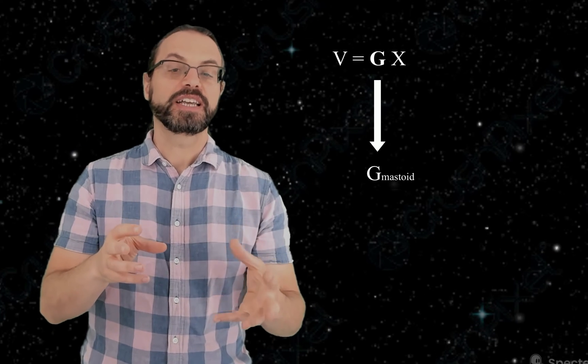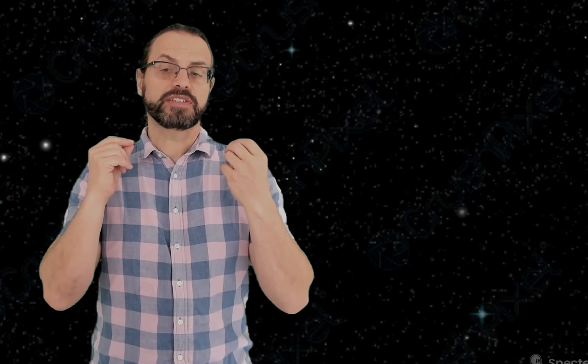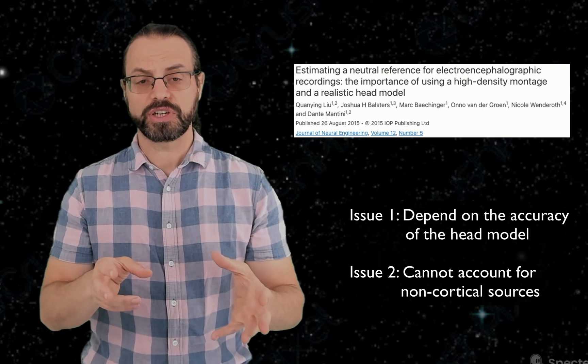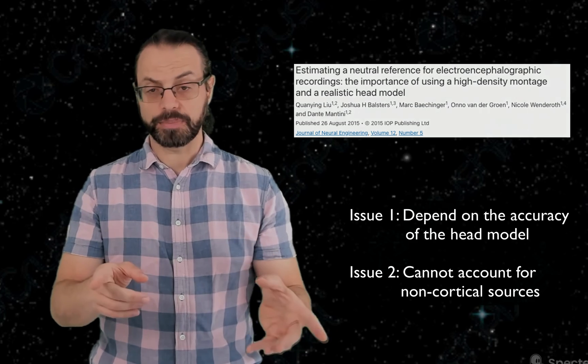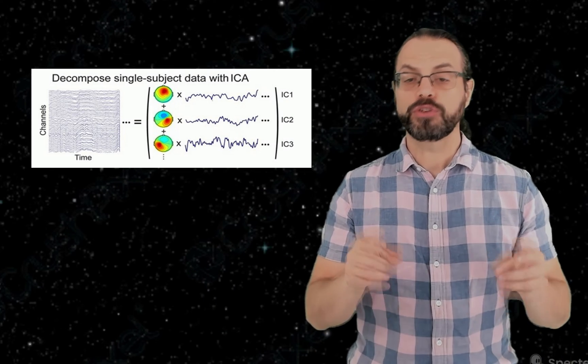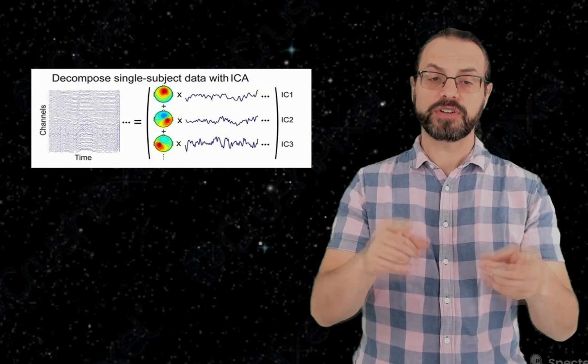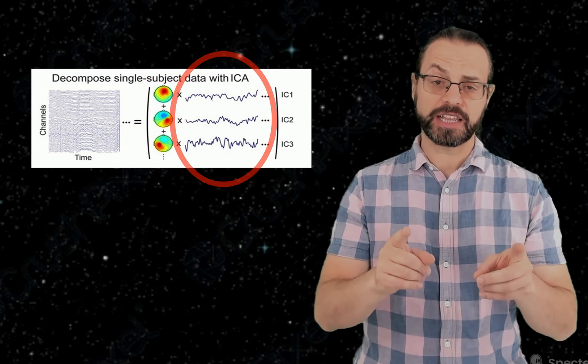Now, this solution is not perfect. One issue is that it depends on the accuracy of your head model, as outlined in this paper. You can also have other reference-free techniques. I want to briefly mention ICA — Independent Component Analysis — which EEG Lab pioneered. ICA component activities are reference-free. In fact, if you run ICA in EEG Lab and re-reference the data, the ICA scalp topography will change, but the component activity will not.